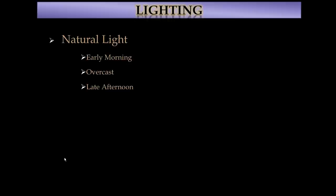The late afternoon, after the sun goes down, is another time where you can get your best shots. A whole workshop can be done on natural light, but this is just an overview. Just know that early morning light tends to give you more bluish-greenish hues, late afternoon tends to give you more orangish with slightly reddish hues, and overcast is good and neutral.